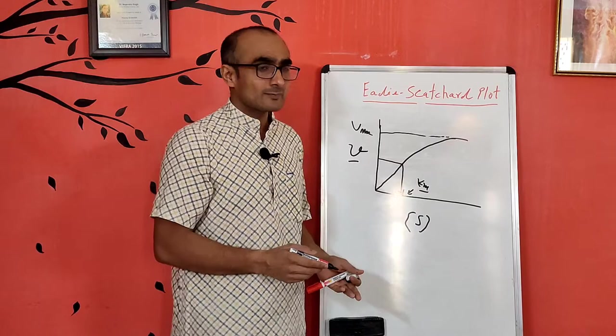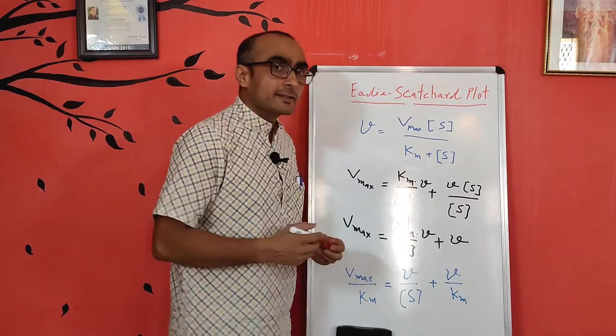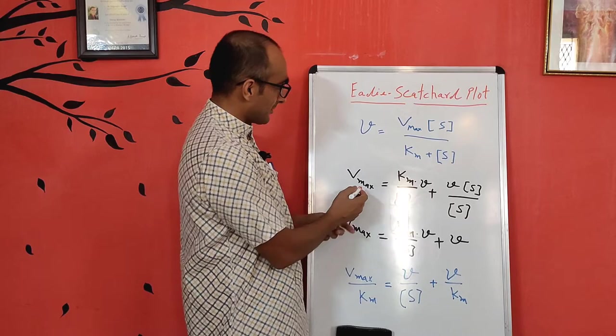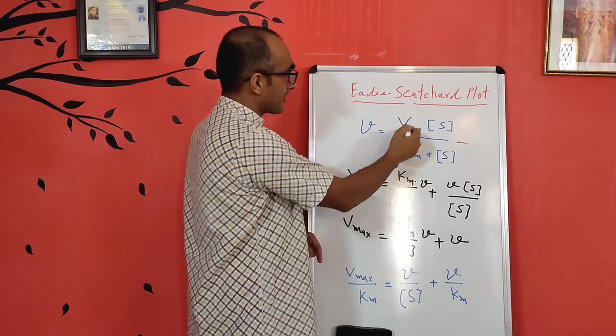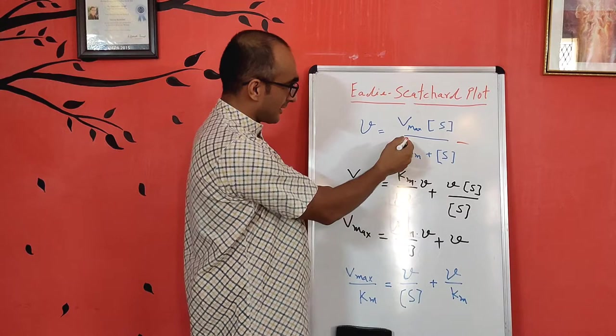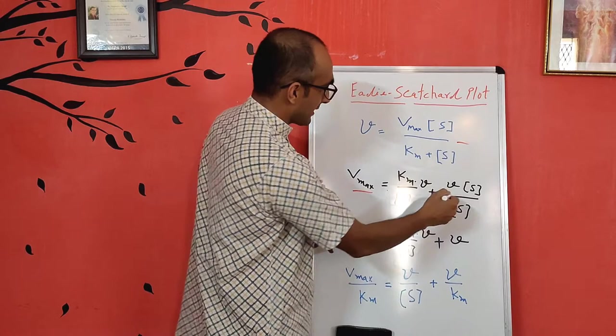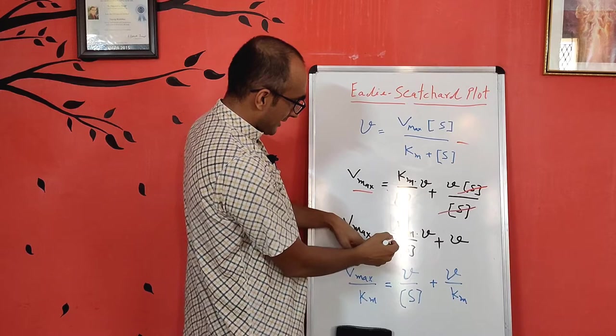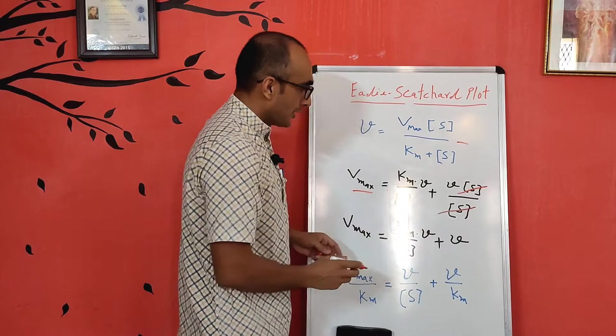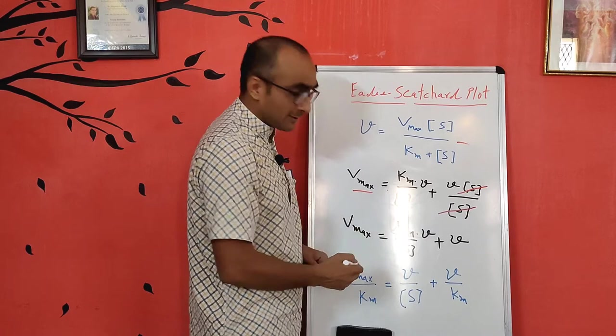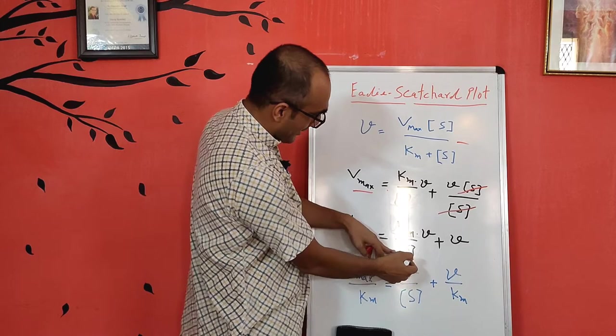One such method is the Eadie-Scatchard plot. The Eadie-Scatchard equation can be derived from the Michaelis-Menten equation. Starting from v = Vmax·S / (Km + S), we rearrange to get Vmax = (Km·v / S) + v. Dividing through by Km gives Vmax/Km = v/S + v/Km, which can be further rearranged.